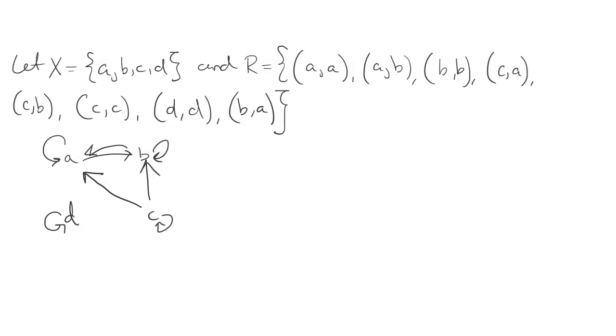And so now we want to ask what properties this relation has. This relation is reflexive because every element of X is related to itself. We can see that in the digraph because we have a loop at every vertex.